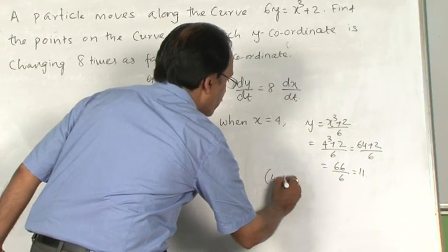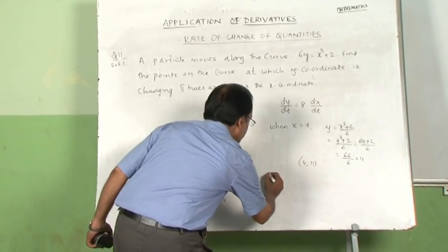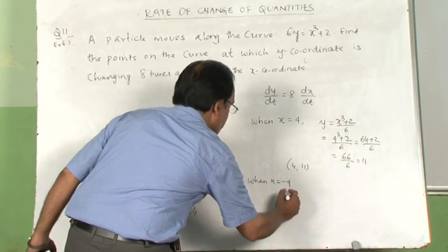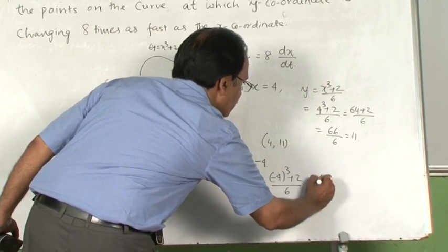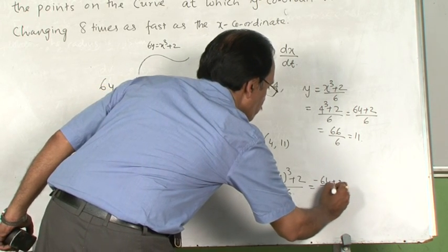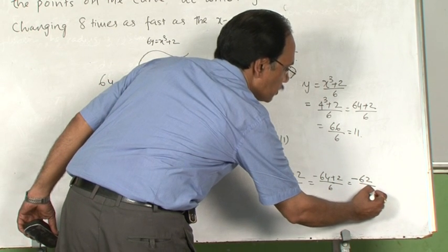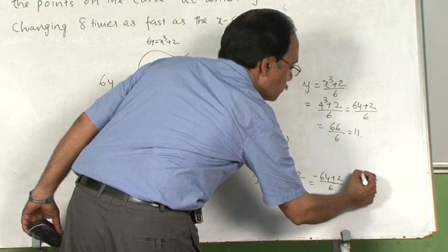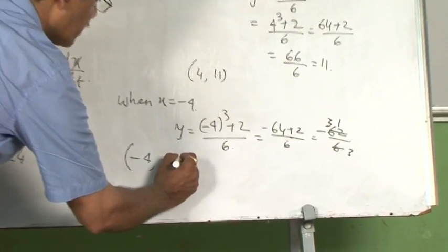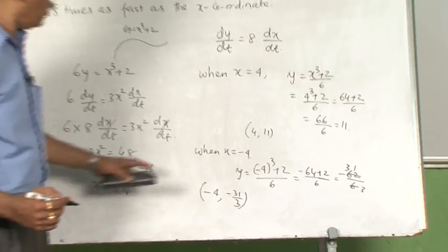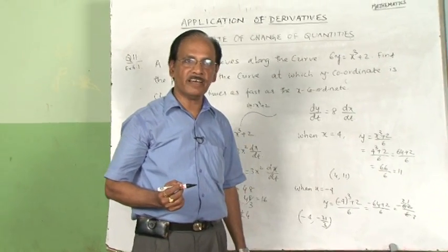Since we need the full points, we find the y-coordinates. When x = 4: y = (4³ + 2)/6 = (64 + 2)/6 = 66/6 = 11, so one point is (4, 11). When x = −4: y = (−64 + 2)/6 = −62/6 = −31/3, so the other point is (−4, −31/3). These are the two points where the y-coordinate is changing 8 times as fast as the x-coordinate.